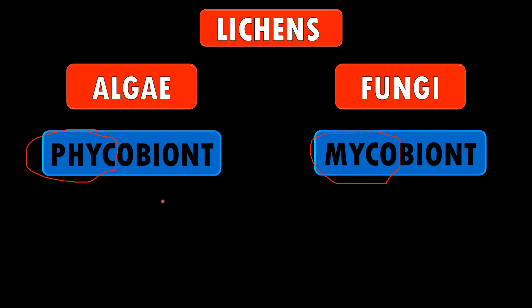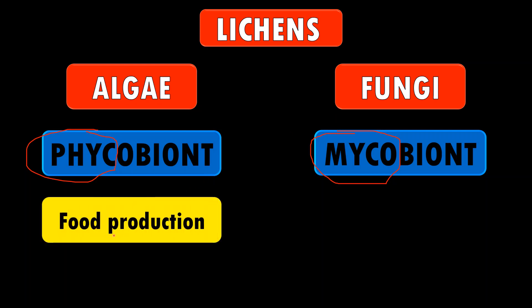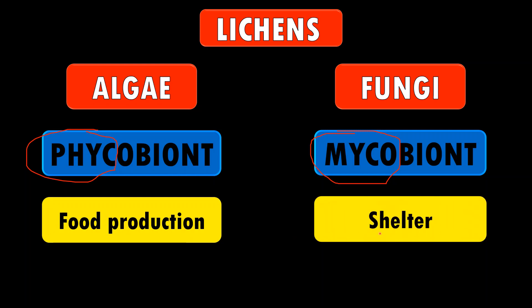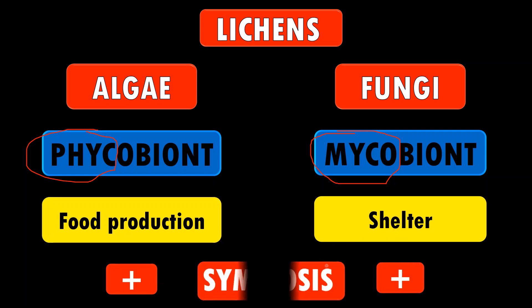In this association, algae help in food production as they are photosynthetic in nature, whereas the fungi gives protection to the algae. So this is a plus-plus association, meaning these two organisms are living together for the benefit of each other. This association is called symbiosis.